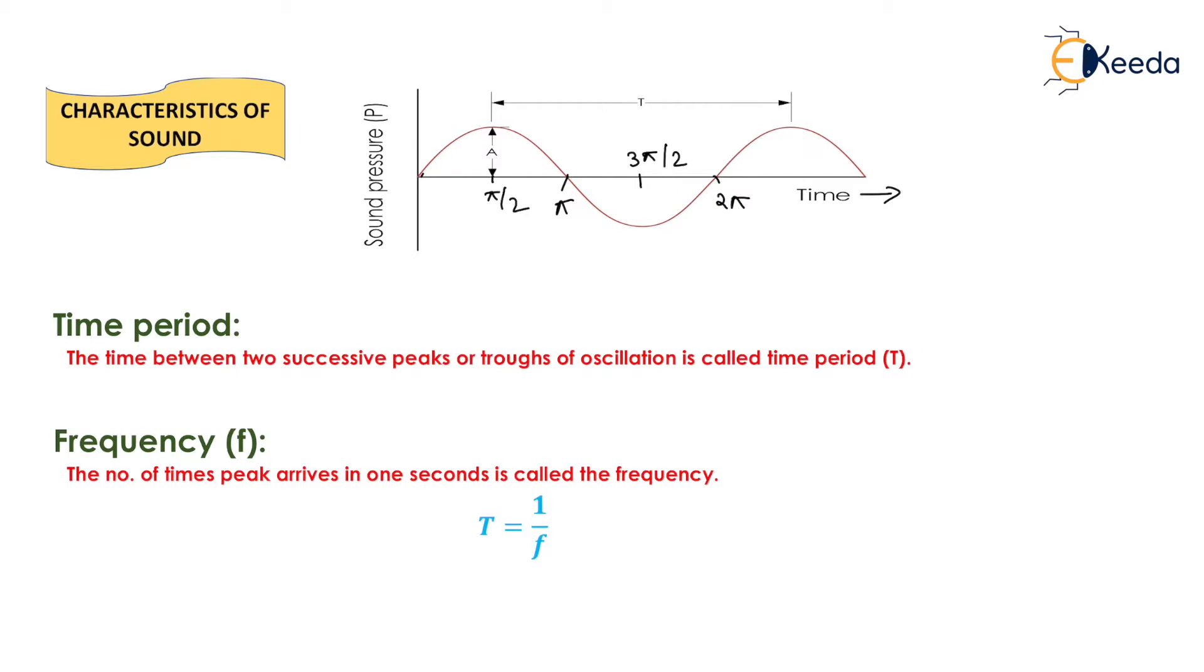Now we need to calculate the time period. Time period is defined as the time between two successive peaks or troughs of oscillation. Time period can also be defined as that time after which the curve will repeat itself. Here, the time period is 2 pi because the sine wave will repeat itself after a time period of 2 pi.